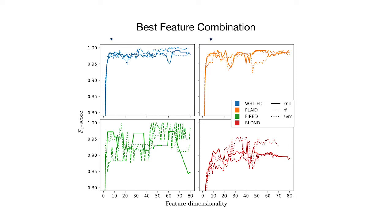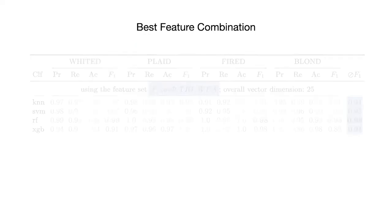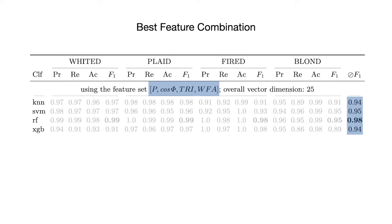And we evaluated this up to a maximum dimensionality of 80 for each dataset and 3 classifiers. You can see that bumping the dimensions up to around 5 or 10 already leads to high F1 scores of over 95%. But you can also see that increasing the dimensionality at some point actually hurts performance, and this is due to the curse of dimensionality. We actually saw a sweet spot at around 25. This spot gives pretty decent results by having only a rather small dimensionality of 25. The selected features for this sweet spot are active power, phase angle, tri-stimulus, and waveform approximation, leading to an average F1 score of up to 98%.